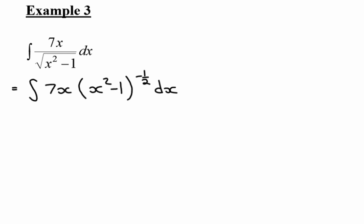Now do I see the rule yet? Let's check. There's my composite function that's a power, my base raised to an exponent. So then I go inside and I differentiate that x squared minus 1 which gives me 2x. I don't currently have 2x.